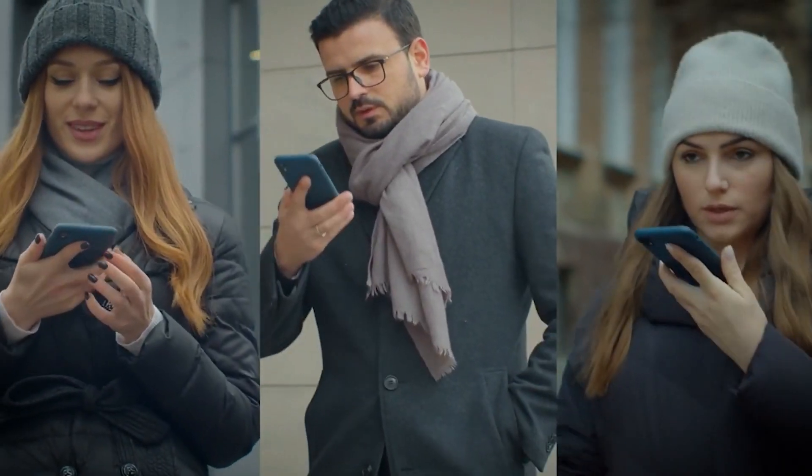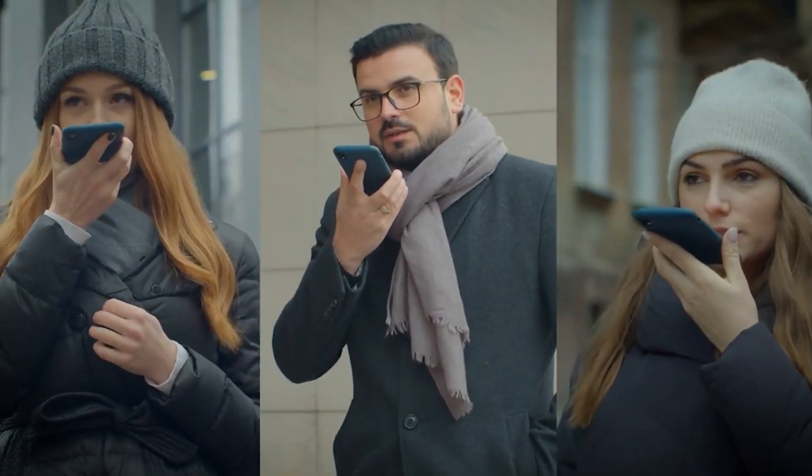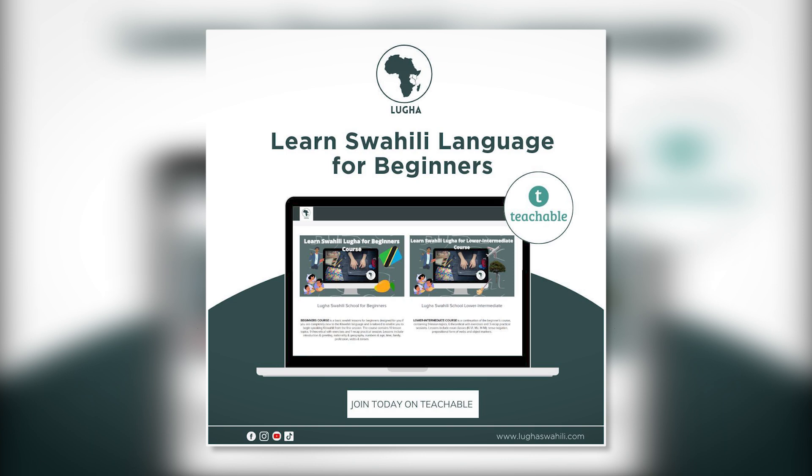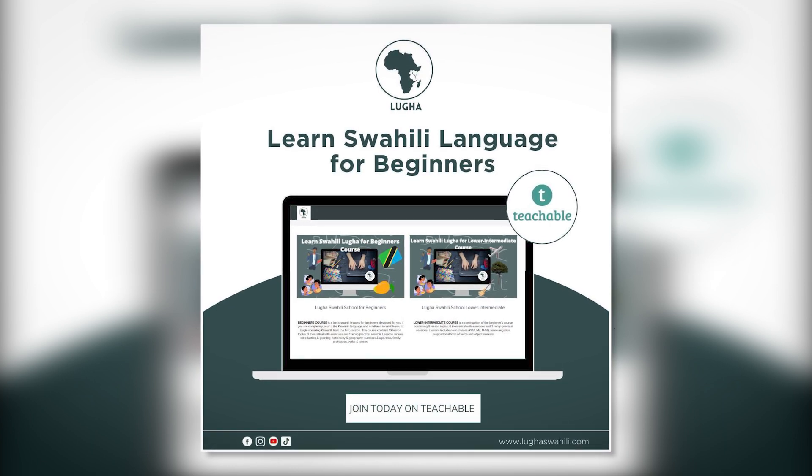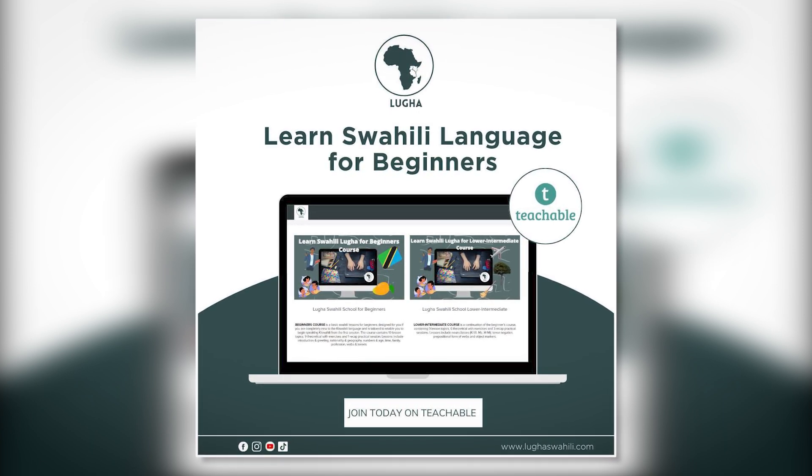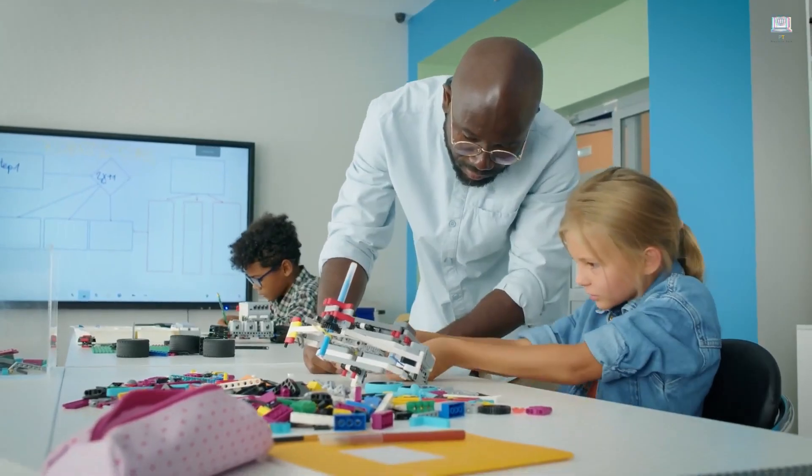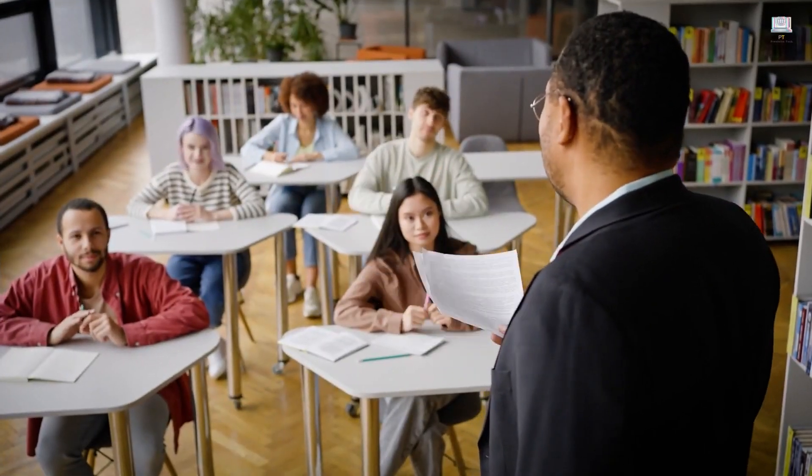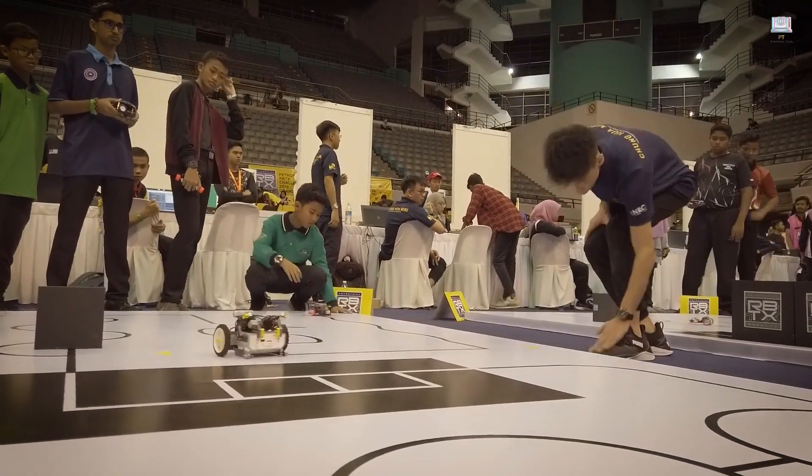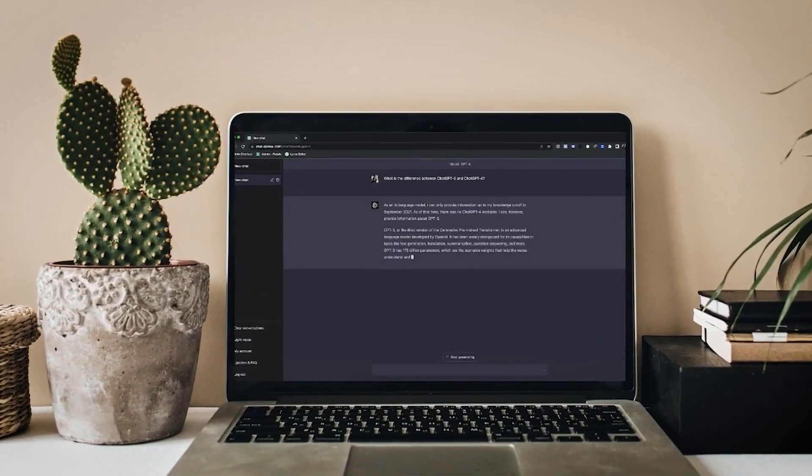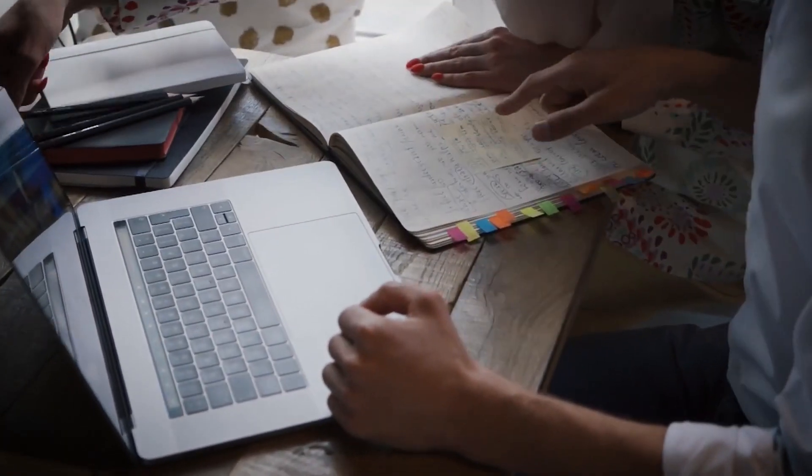A standout example of this localization effort is the team in Nairobi spearheading the development of Somanasi, an AI-based tutor finely tuned to align with the curriculum in Kenya. The name itself, meaning 'learn together' in Swahili, embodies the collaborative spirit at the core of this innovative educational tool. What sets Somanasi apart is its thoughtful design, considering the cultural context to create an experience that feels familiar and relatable to the students using it. This localized approach transcends the one-size-fits-all model, acknowledging the diverse educational landscapes worldwide.